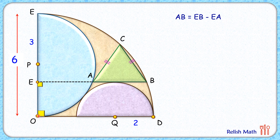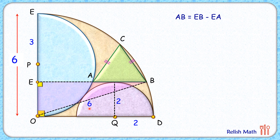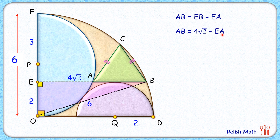For length EB, let's join point O to point B. In triangle BEO, OB is the radius of the quadrant, thus it is six centimeters. The radius of the purple semicircle is two centimeters, so EO length will also be two centimeters. Applying the Pythagorean theorem in triangle EOB, we get: two squared plus EB squared equals six squared, and solving it we get EB equals four root two centimeters.